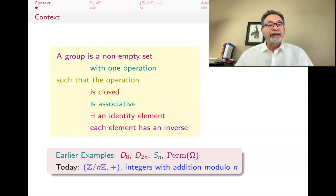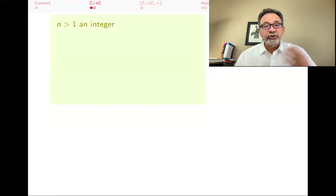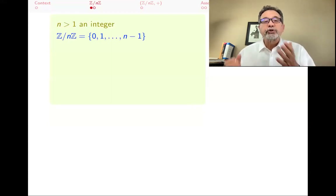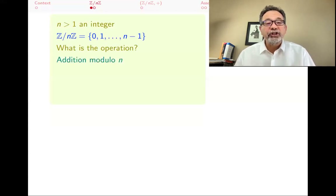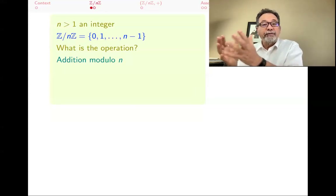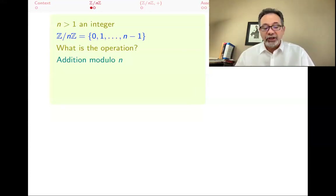In this video, we want to think about another example, which is integers with addition modulo n. Z mod nZ is the notation I will use for that. You start with an integer greater than 1 — so 2, 3, 5, 17, 18. Then Z mod nZ is the collection of numbers 0, 1 through n minus 1. The operation is going to be addition modulo n. It can't be normal addition, because if you take two elements in this set and add them, if they're large enough, you will end up outside of this set.